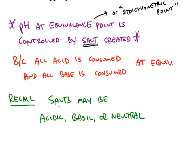You remember from the previous chapter that salts could either be acidic, or they could be basic, or they could be neutral. So that means that the equivalence point could be acidic, could be basic, or it could be neutral. It depends on what type of salt you make.